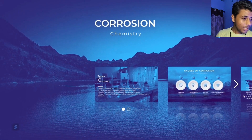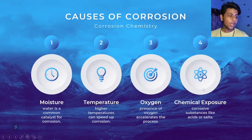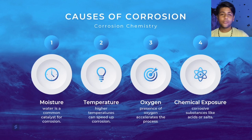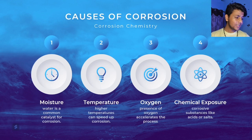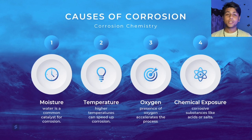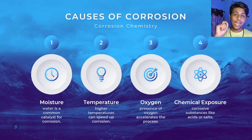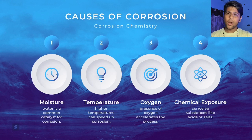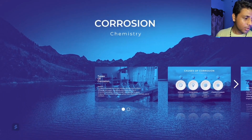Next, causes of corrosion. I have noted four points. First, moisture — water is a common catalyst for corrosion, as everyone knows. Second, temperature — higher temperatures can speed up corrosion significantly. Third, oxygen — the presence of oxygen is important and accelerates the corrosion process. Fourth, chemical exposure — chemicals can also contribute to the occurrence of corrosion.